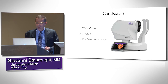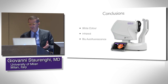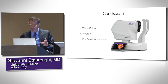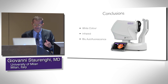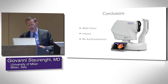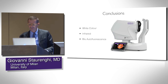In conclusion, the big advantage of the Adon is that it produces a true white color image — not a false color, not a multicolor, but a real white color. It also provides an infrared image, which is very useful, and you can use it many times without issues. And it provides blue autofluorescence which, in clinical practice, is very useful for making differential diagnoses. Thank you.